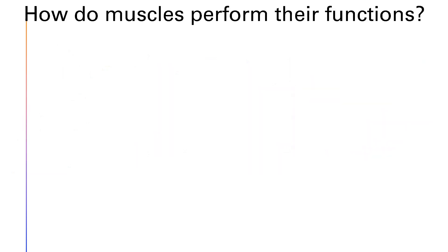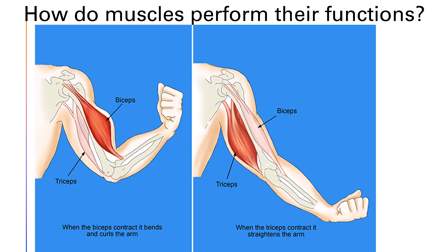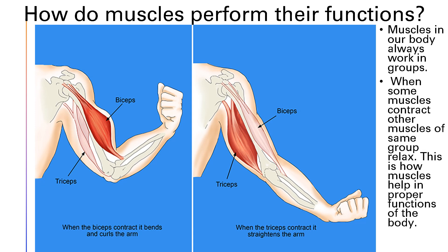Now let's see how muscles perform their functions. The muscle in the front of the bone in the upper arm is called the bicep, whereas the muscle on the back side of the bone is called the tricep. The muscles of our body always work in groups. When some muscles contract, the other muscles of the same group relax. This is how muscles help in the proper functioning of the body.